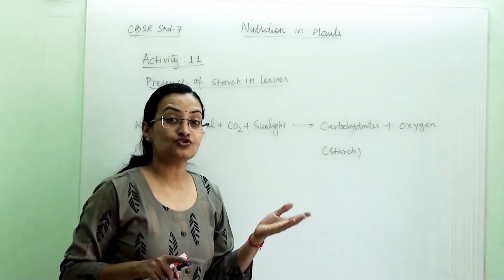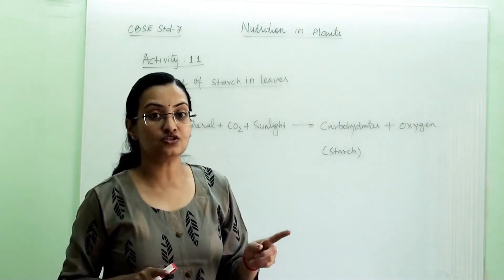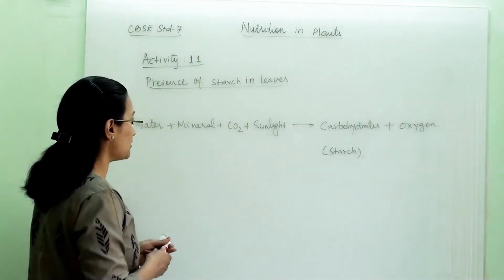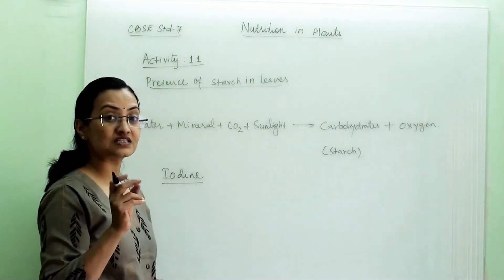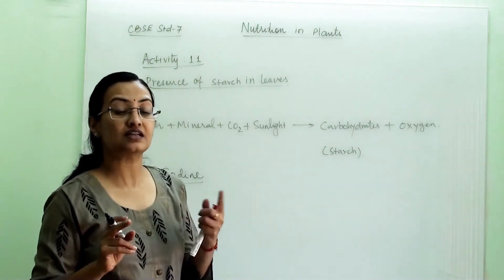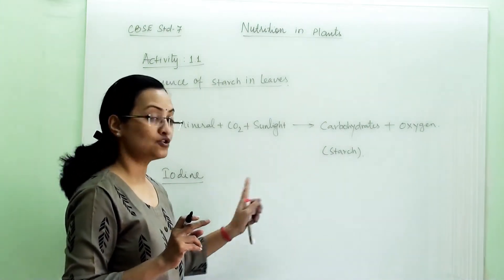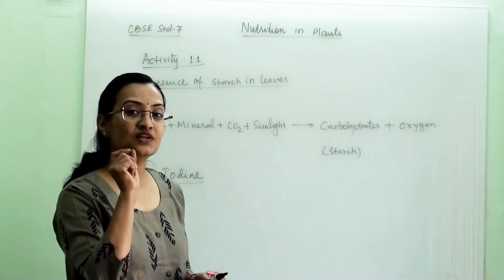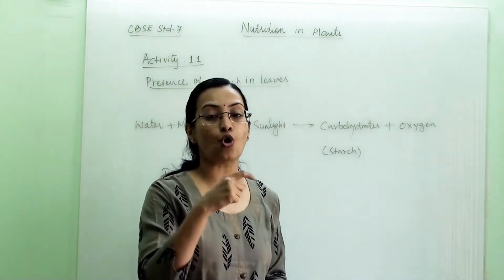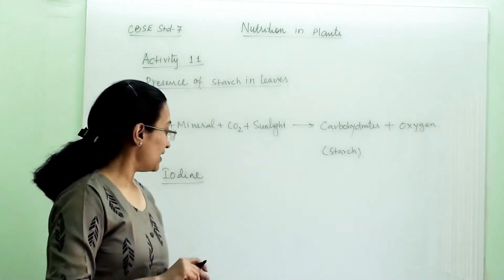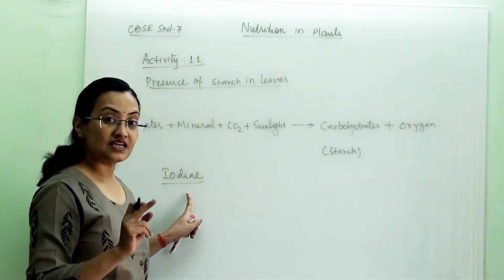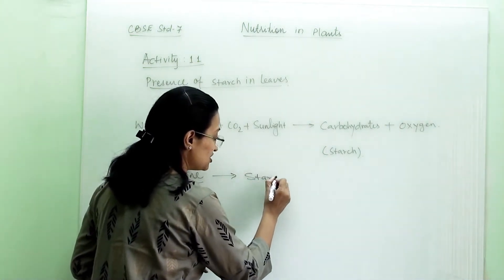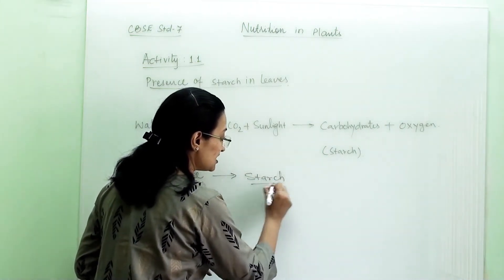If we want to check the presence of starch in the leaves, we use iodine. Iodine is a substance which gives a test in the presence of starch, so it is termed as an indicator. An indicator indicates the presence of something — in this case, iodine indicates the presence of starch present in the leaves.